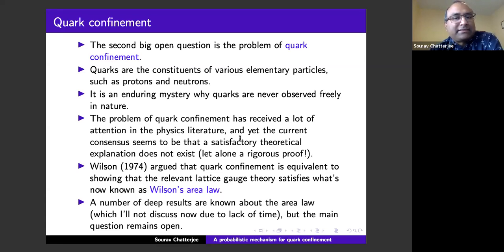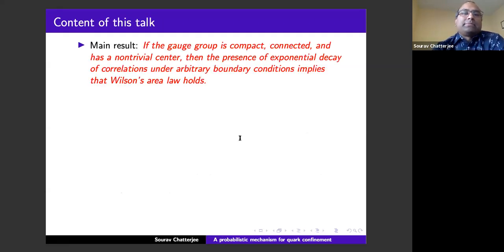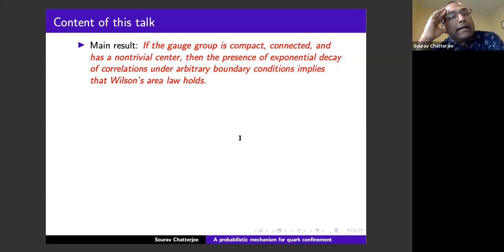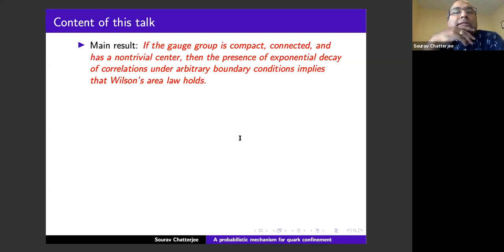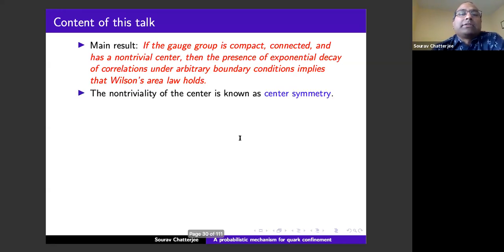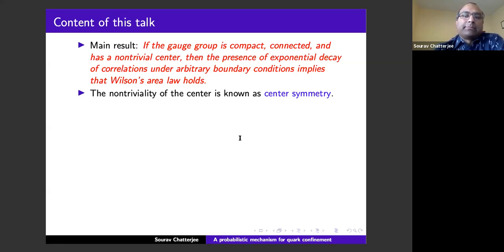Before saying anything mathematical, let me tell you the main result in plain language. The main result is: if the gauge group is compact, connected, and has a non-trivial center — most groups of interest satisfy this, including SU(3), the most important group — then if the theory has exponential decay of correlations under arbitrary boundary conditions, then Wilson's area law holds. The non-triviality of the center is known as center symmetry, and there's a long history in physics connecting center symmetry to confinement. This is, I think, the first result giving a rigorous justification for that.